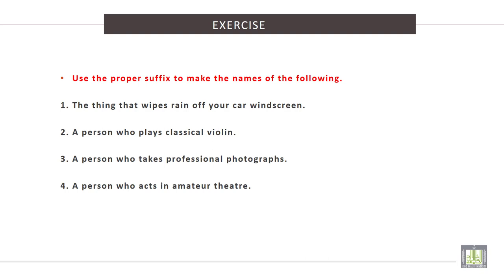Exercise: Use the proper suffix to make the names of the following. 1. The thing that wipes rain off your car windscreen — this is called a wiper. 2. A person who plays classical violin — this person is called a violinist.